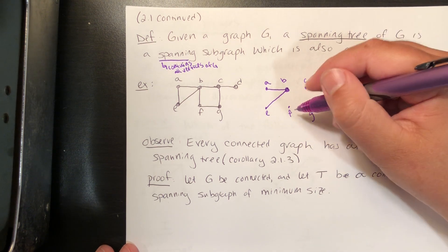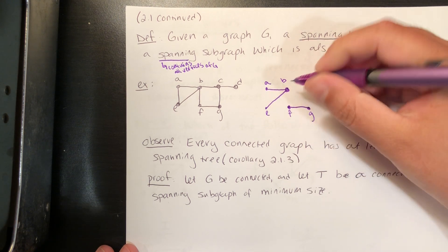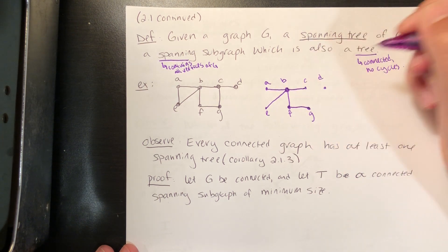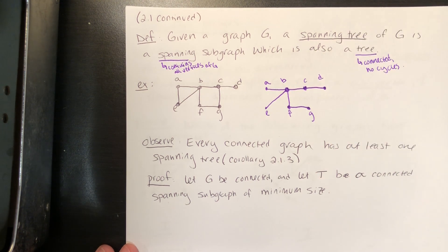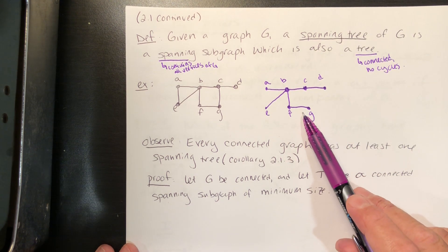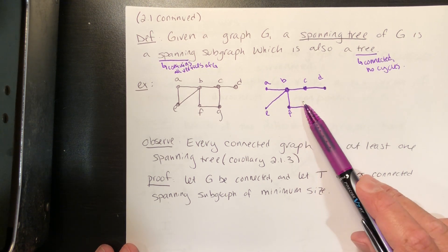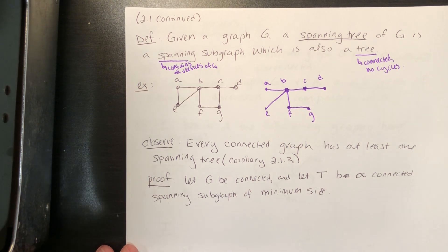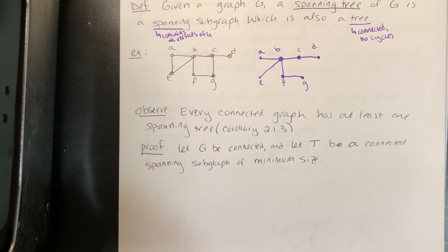Now we also need to make sure this graph is connected. Let's include fg as well, and also bf — starting to connect things up — and bc, and finally cd. This is an example of a spanning tree: it's a spanning subgraph containing all the original vertices, it has no cycles, and it's connected. It's not the only spanning tree — you could come up with other examples.